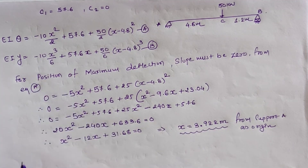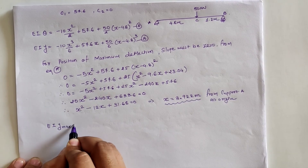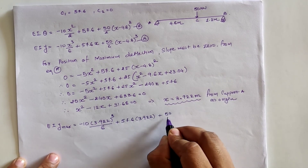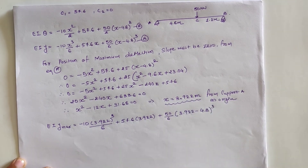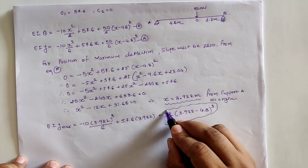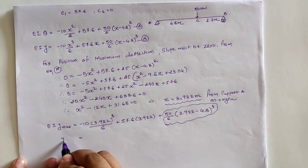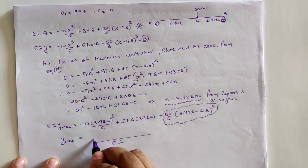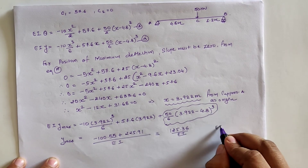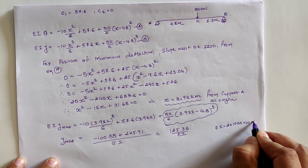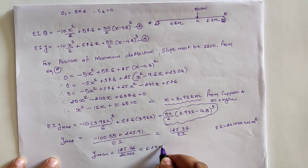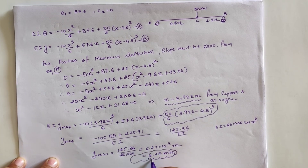Substituting x = 3.922 meter into the deflection equation: the term (3.922 − 4.8) is negative, so it is neglected per Macaulay's method. Using EI = 20,000 kilo Newton meter square, the maximum deflection y_max is calculated as 6.27 mm.